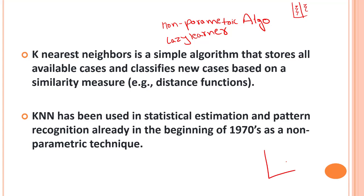So whenever we have our dataset, KNN does not do anything to the training set — it's a lazy learner. When we pass in some new data, at that point it will perform the classification task. KNN at the training phase just stores the dataset, and when it gets new data it classifies that data into a category that is most similar to the new data. These are keywords that will be asked in your coding interviews — what is a lazy learner, what is a non-parametric algorithm.